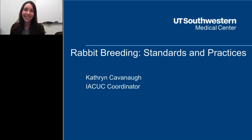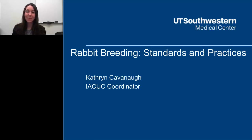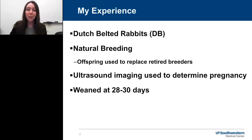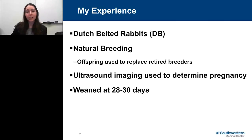Thank you, Christina. Hi everyone, welcome. Thank you for tuning in. Today I'll be discussing basic rabbit breeding and also some tips and tricks. A little bit about my personal experience: I bred Dutch belt rabbits. We used natural breedings — no hormone manipulation or artificial insemination, all natural breeding pairs. We used offspring as replacement breeders, ultrasound imaging to determine pregnancy, and we weaned rabbits at 28 to 30 days.